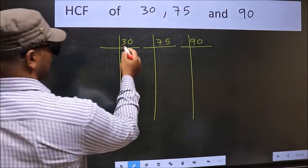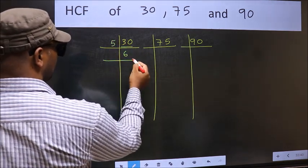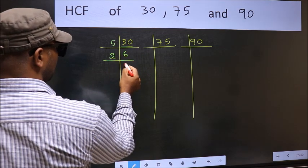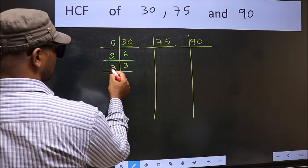Here we have 30. 30 is 5 times 6. Now 6 is 2 times 3. Now 3 is a prime number so 3 times 3.